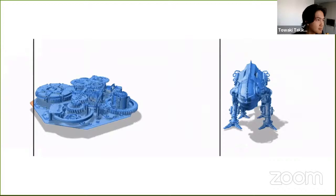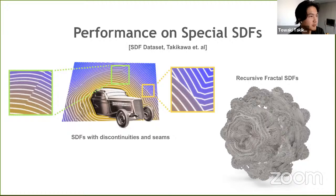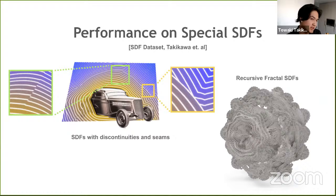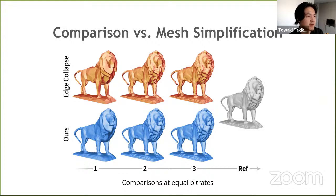Here are some quantitative results. Even though we use fewer parameters than previous works, we fit much better and show a much better bit rate distortion curve. We also check performance on special SDFs — math functions with interesting properties like discontinuities, seams, and recursive fractal SDFs with a lot of detail — and our method fits these reasonably well while previous works cannot. We also compare against traditional mesh simplification workflows like traditional level of detail, and at equal bit rates, our representation captures details better than edge collapse.